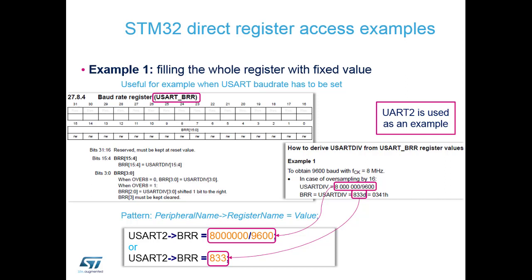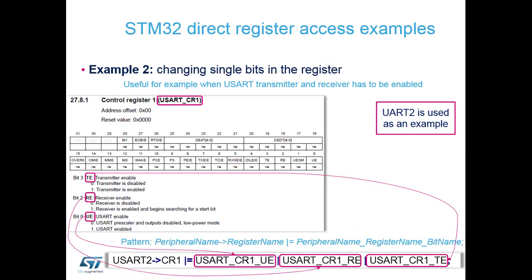With direct register access, if you want to write an entire register, you use the format shown: the pointer to the base address structure - USART2 - then the pointer to the offset inside that structure, which is the baud rate register, and then load a value directly into that register. If you want to manipulate single bits like in control registers, you start the same way with the base address and offset, then OR together the different bit definitions of items you want to enable.